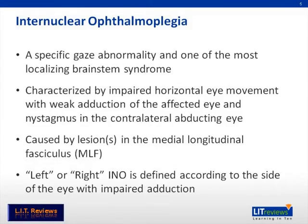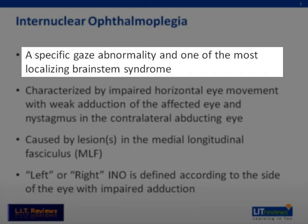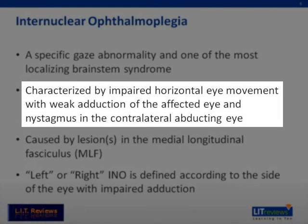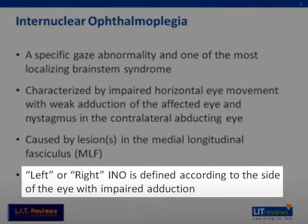INO is a specific gaze abnormality affecting horizontal movements. There is limitation of adduction of one eye and nystagmus associated with abduction of the contralateral eye. The laterality of the INO is defined by the side of the eye with impaired adduction.